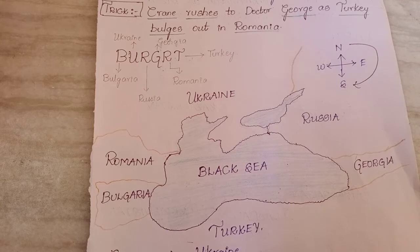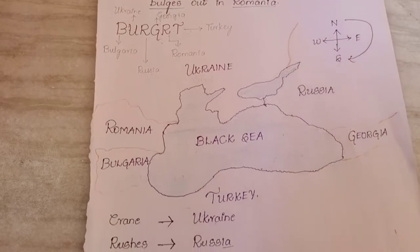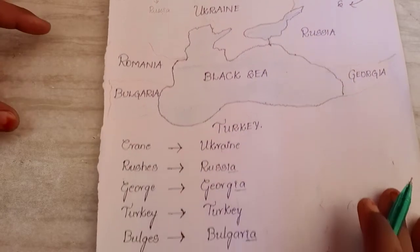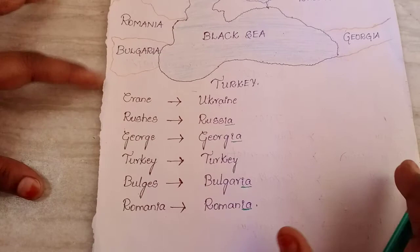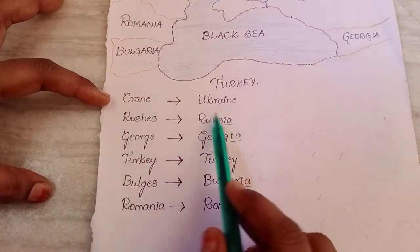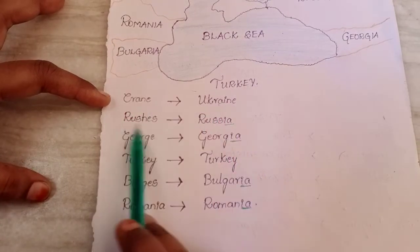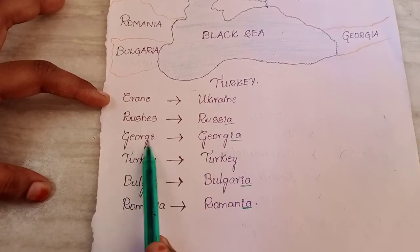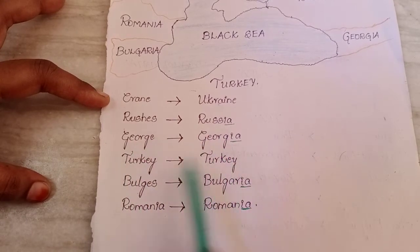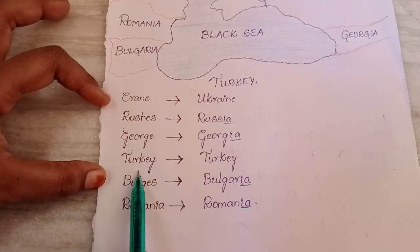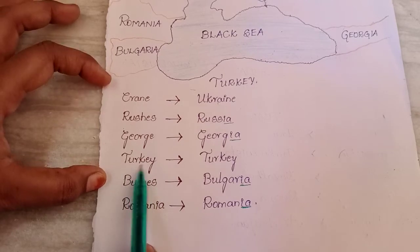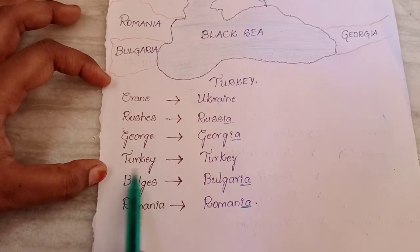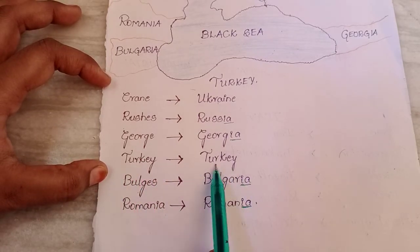There are very little chances for you to get confused or forget anything. In that sentence, 'crane' sounds like Ukraine, 'Russia' sounds like Russia, 'George' sounds like Georgia, and 'turkey' — turkey is also the name of a bird, as well as the name of the country.